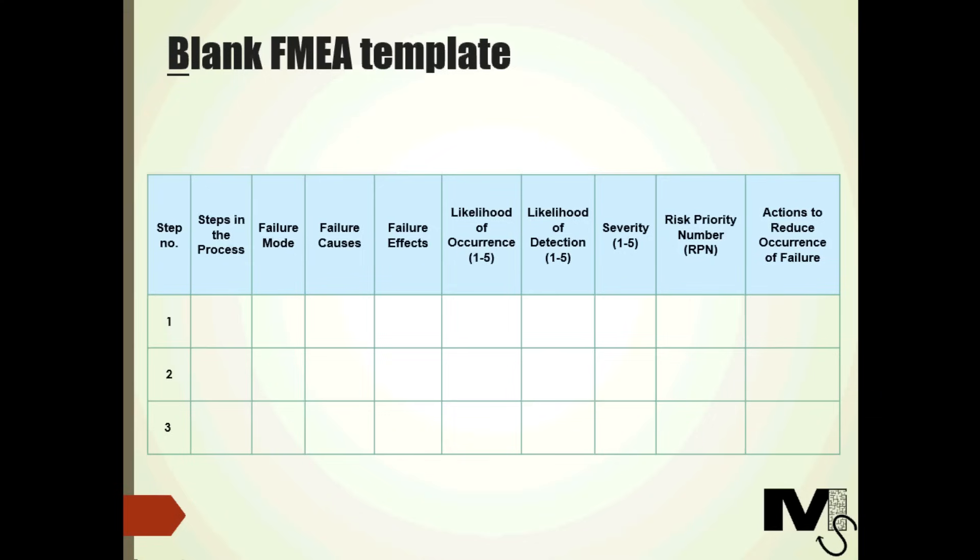We firstly outline the steps in the process in the first component. The next column, failure mode, outlines what could possibly go wrong during that particular step in the process. It's a note about the way the step in the process could fail basically.